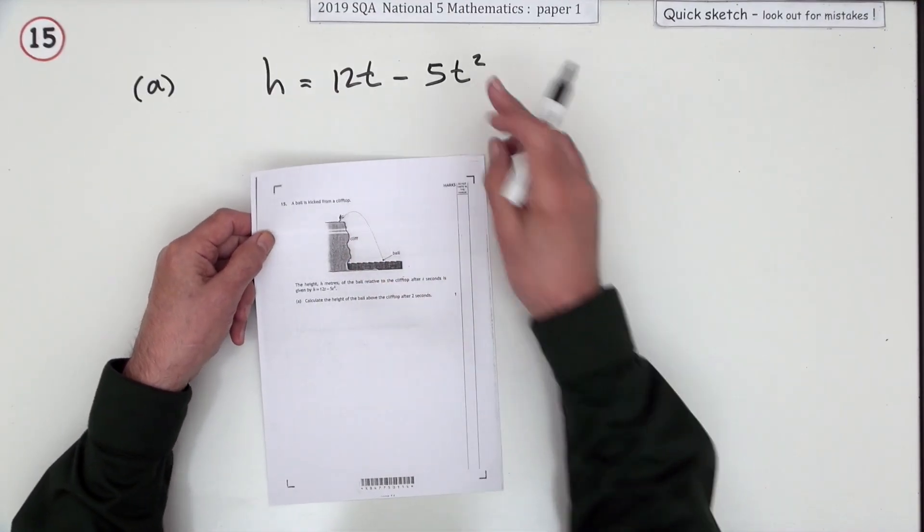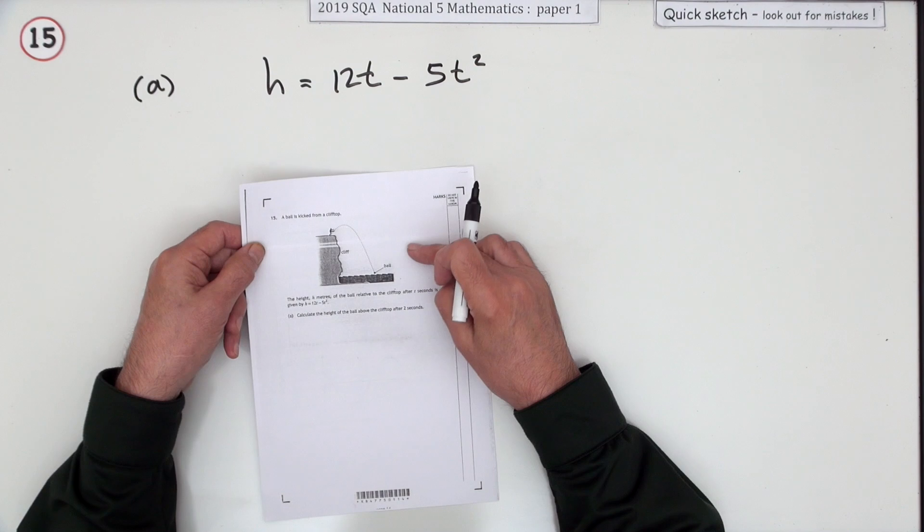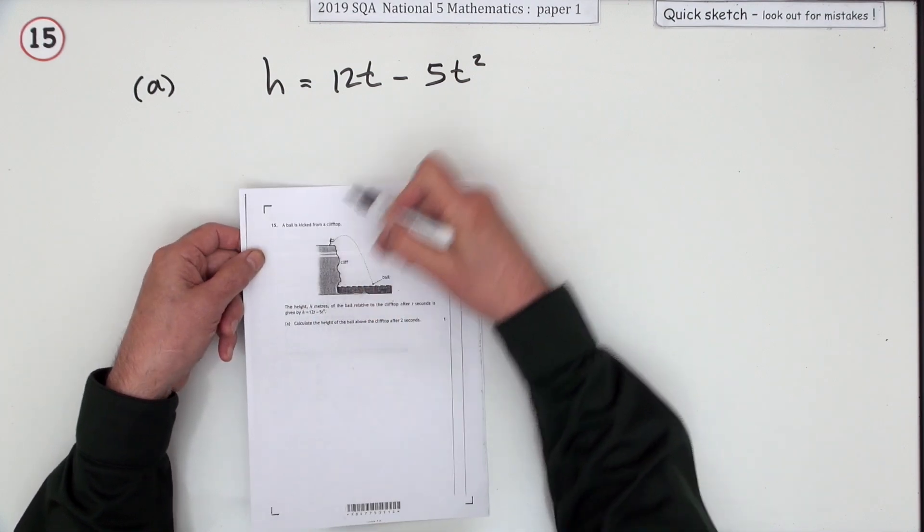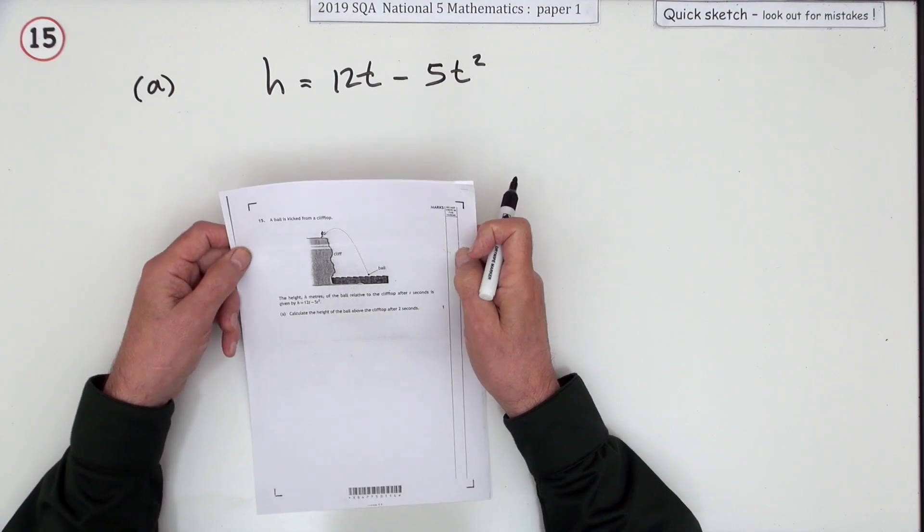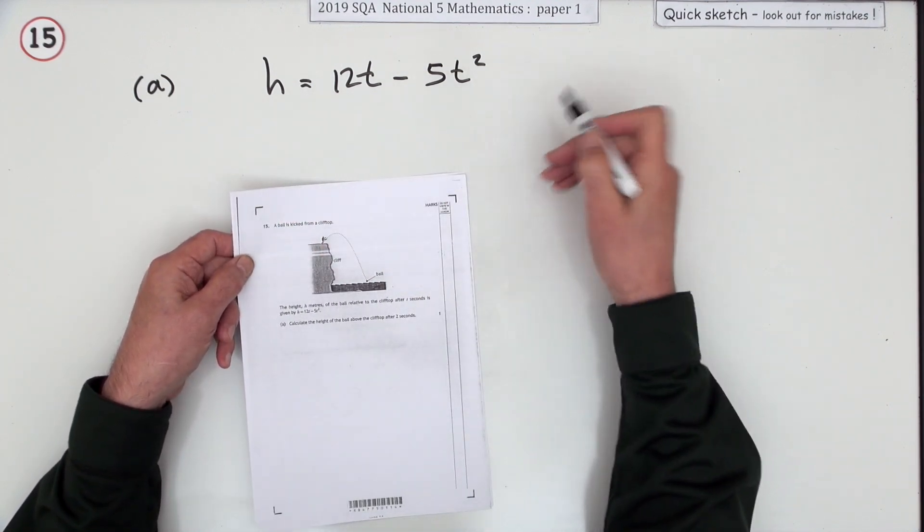Number 15, the last question in the paper then. A ball is kicked from a cliff top, falls a parabolic path - there's your parabola, it's a parabola question, it's quadratics.